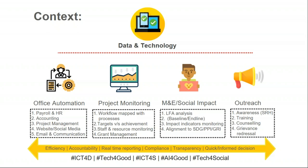Classic outreach examples include awareness campaigns, training, and counseling. In India, many organizations work in the adolescent space where sexual and reproductive health counseling is a key area. A very classic example is a chatbot — many organizations are building chatbots with pre-configured content where an adolescent can enter and ask questions safely, without judgment or bias. Most requirements coming from organizations are either a combination of these four buckets or standalone, and any solution developed will have one of these components.